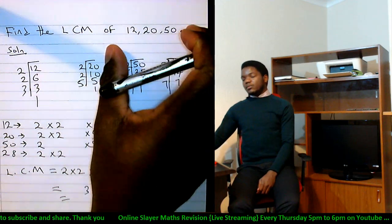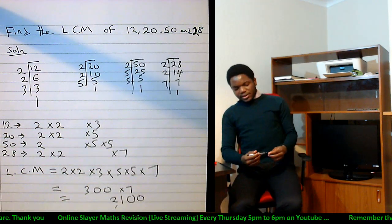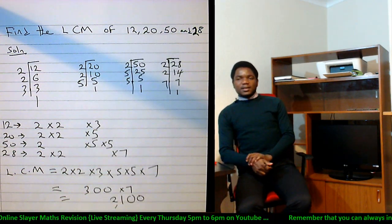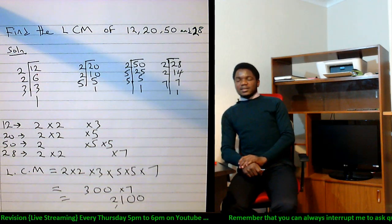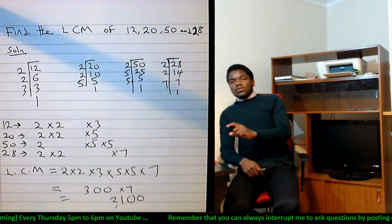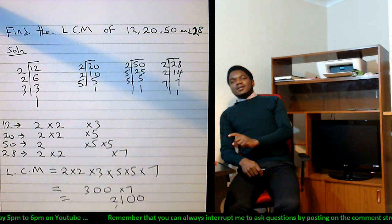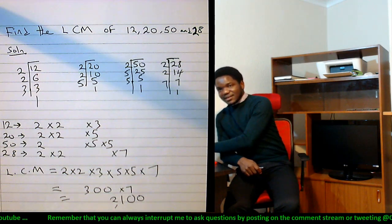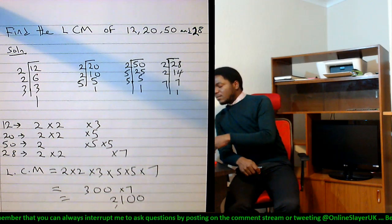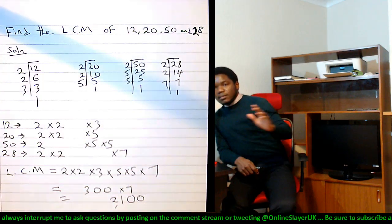Now this is the least common multiple of these guys. Can you imagine how large that is? But the message it's telling us is no other number lower than this can be divisible by all of these numbers conveniently.